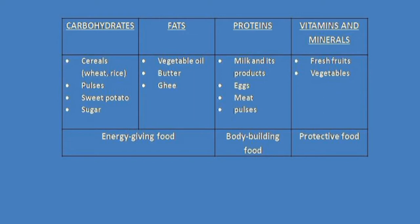Proteins help us to grow. Foods rich in proteins are milk, eggs, meat, and pulses. Fats give us more energy than carbohydrates. Vegetable oil, butter, and ghee are rich in fats.